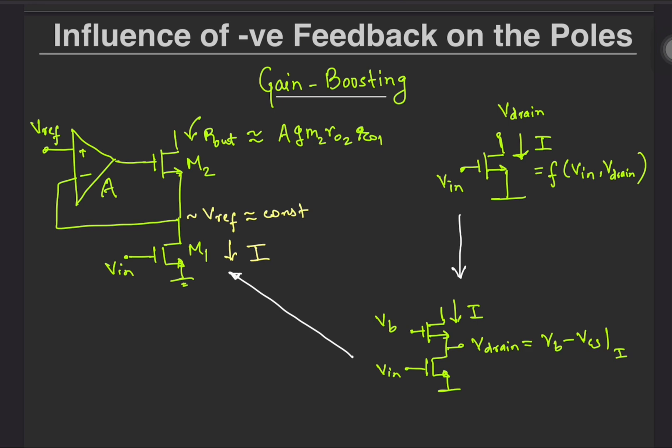And by doing so it makes M1 into a better current source, so that when we look at it from the output node, we see a current that is even lesser sensitive to the output node voltage, which means that we have boosted the output impedance.